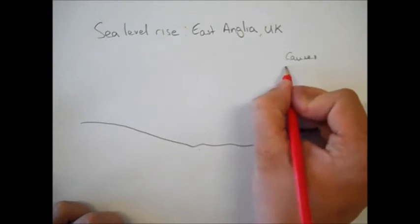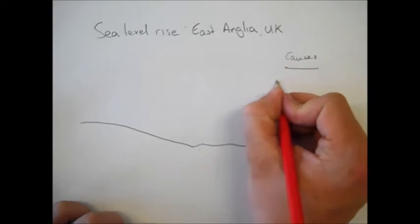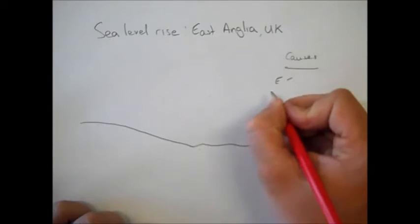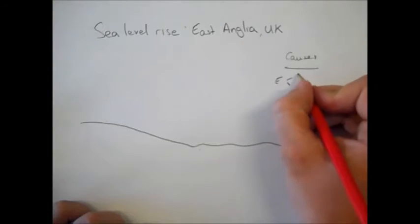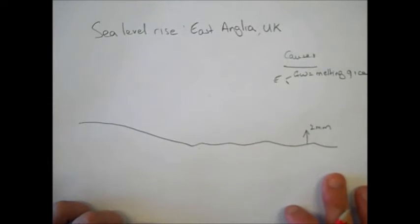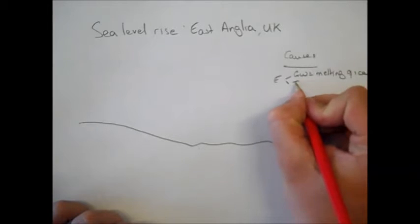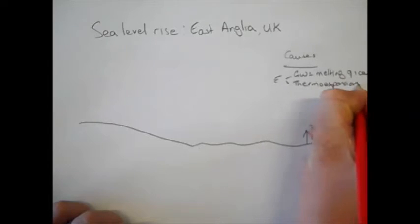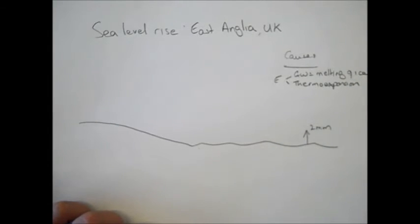Actually if we look at the causes there's two main ways. We have eustatic sea level rise, which is being caused by two things. Firstly, obviously global warming is equal to melting of ice caps and on-land glaciers. That's obviously resulting in an increased amount of water into the sea. So that's actually just the water taking up more room, simply due to the fact that it is actually warmer.